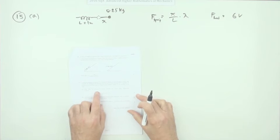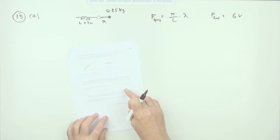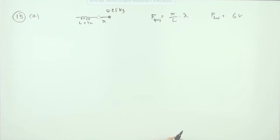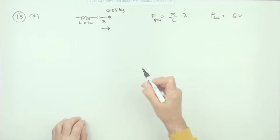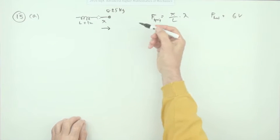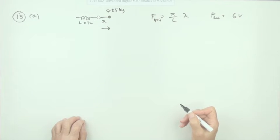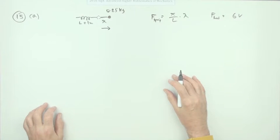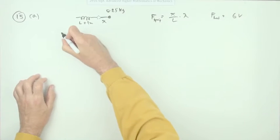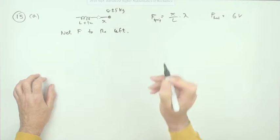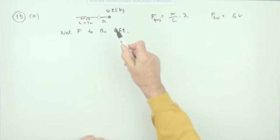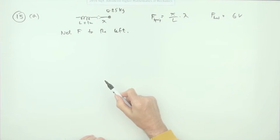For two marks, you have to show that the subsequent motion is governed by a second order differential equation. The net force acting depends on direction — x is measured to the right, but upon release the force and velocity will be acting to the left. So we'll take the net force as acting to the left, meaning x will be negative in that direction.